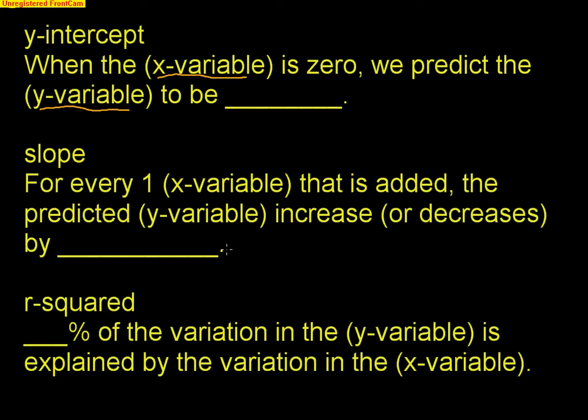R-squared is the percent of the variation in the y variable that is explained by the variation in the x variable. For example, 90% of the variation in the price of the car is explained by the variation in the mileage of the car. Another way to say it: 90% of the variation in price is explained by the linear model that uses mileage to predict price. If you write down these scripts and fill in the blanks, it's really hard to mess them up.